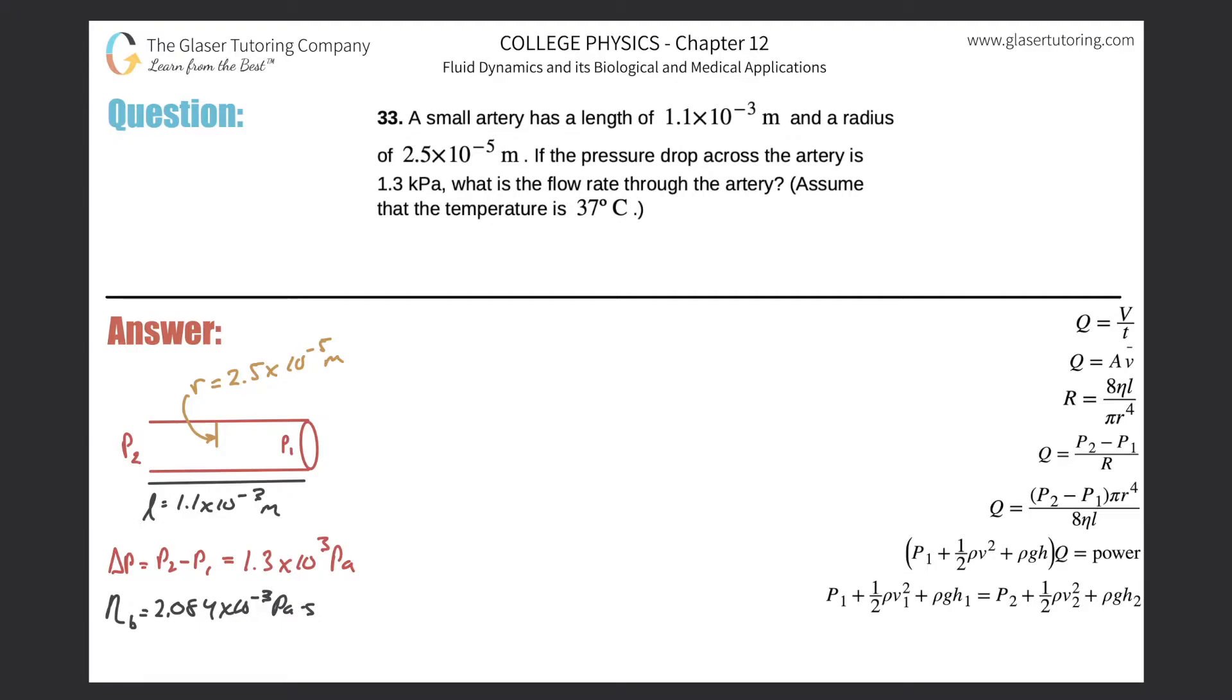Number 33. A small artery has a length of 1.1×10⁻³ meters and a radius of 2.5×10⁻⁵ meters. If the pressure drop across the artery is 1.3 kilopascals, what is the flow rate through the artery? Assume that the temperature is 37 degrees Celsius.